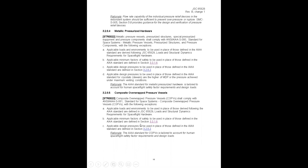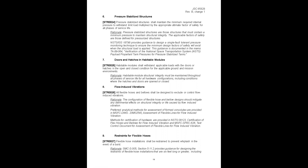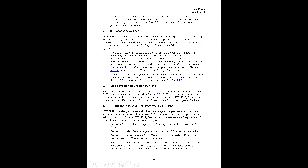Pressure-stabilized structures must maintain the minimum required internal pressure to withstand limit loads multiplied by the appropriate ultimate factor of safety. The standard also covers doors and hatches, flow-induced vibrations, and restraints for flexible hoses. Secondary volumes — compartments or volumes integral or attached by design to pressurized system components — require a minimum factor of safety of 1.5.